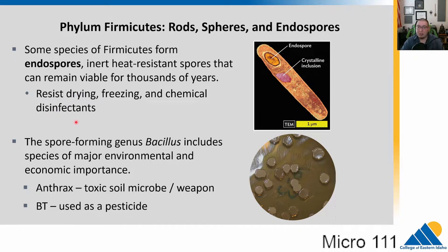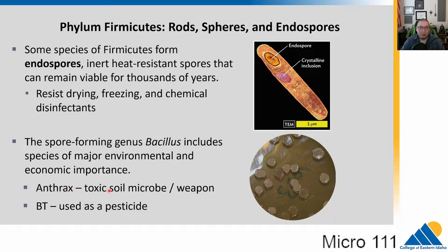We've talked about the genus Bacillus before. This is a major environmental spore former. We have things like Bacillus subtilis and Bacillus cereus that are common in the soil. Also Bacillus anthracis, which oftentimes infects livestock or farmers that work with livestock. This is a toxic soil microbe, and it creates a toxin that people can theoretically use as a bioweapon. Anthrax spores are super resistant to heat and other forms of destruction, so they make a good bioweapon that way.